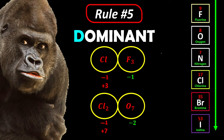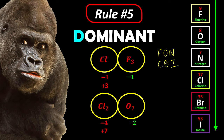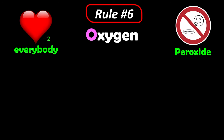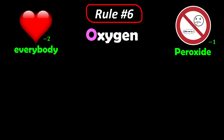To remember this dominance series, you can think of: F, O, N, C, B, I — or 'phone can be idiot.' Fluorine is the most dominant, then oxygen, nitrogen, carbon, bromine, iodine. Rule number six tells us that oxygen loves everybody, so it is usually −2. But oxygen doesn't like peroxide — peroxide means two oxygens bonded together in a single covalent bond — and in peroxide the oxidation number becomes −1.